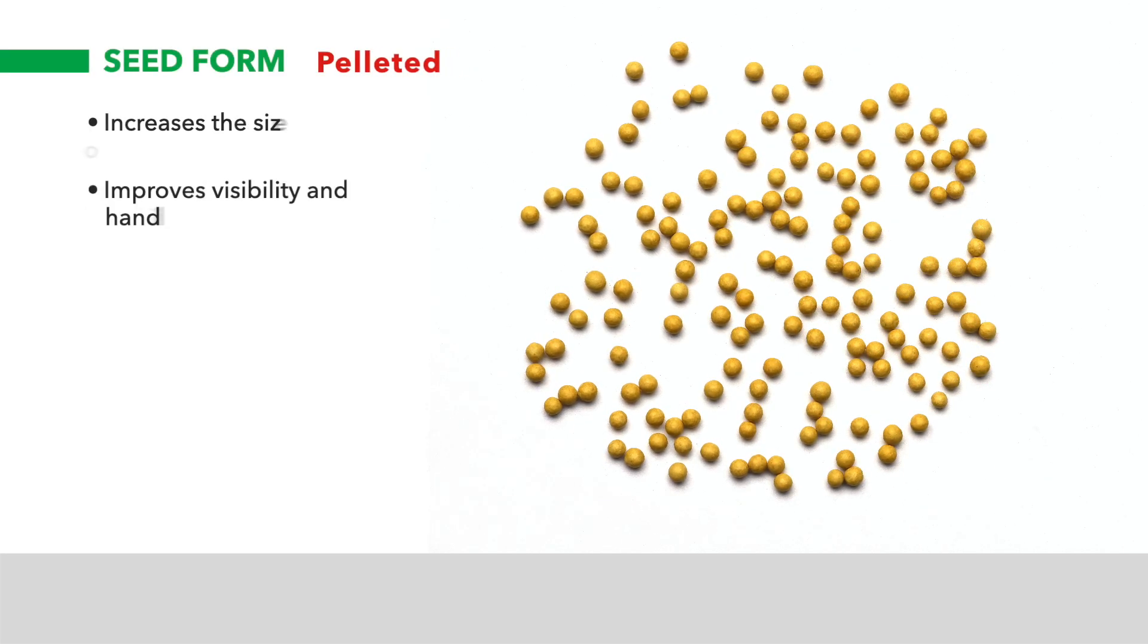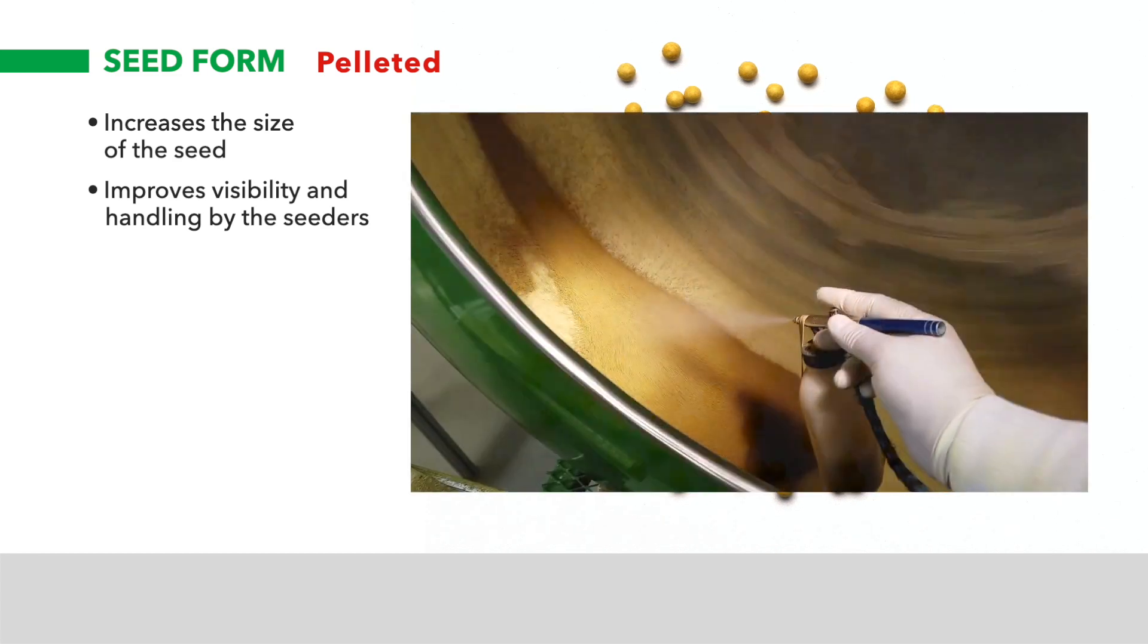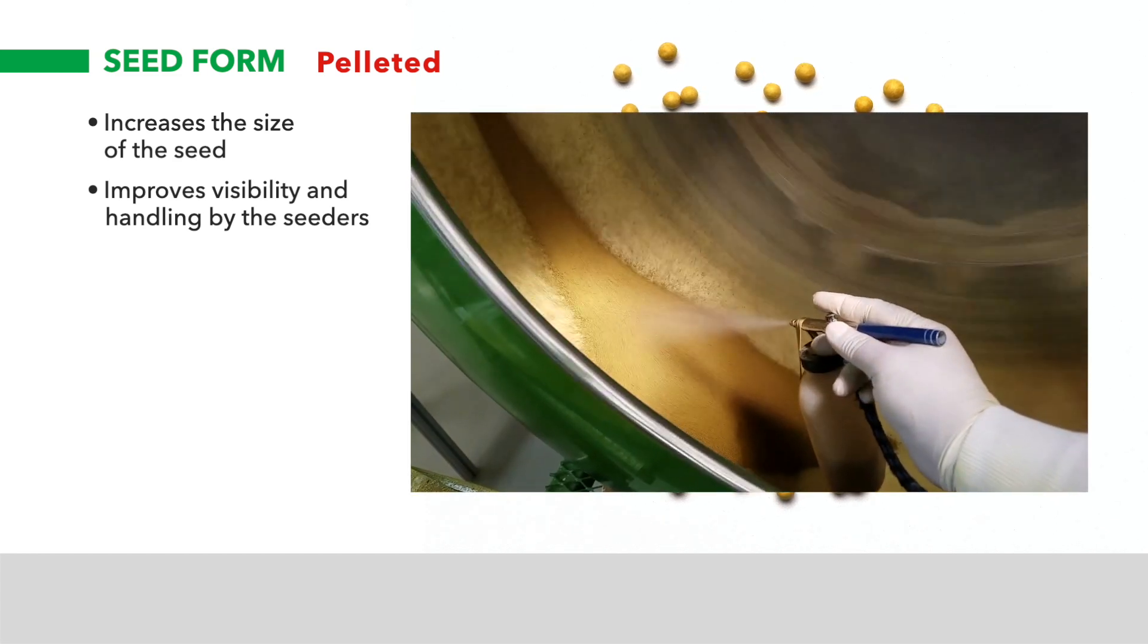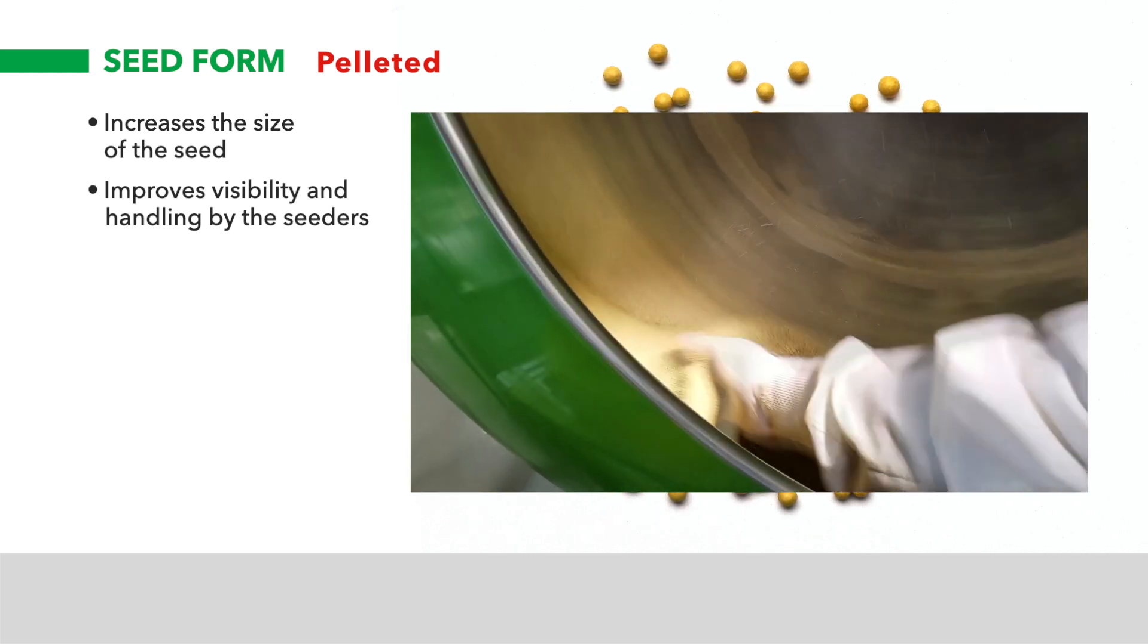Our pelleted seed is enhanced through a proprietary process where multiple layers of pelleting material are applied. This increases the size and makes the seed spherical, improving visibility and handling by the seeders.